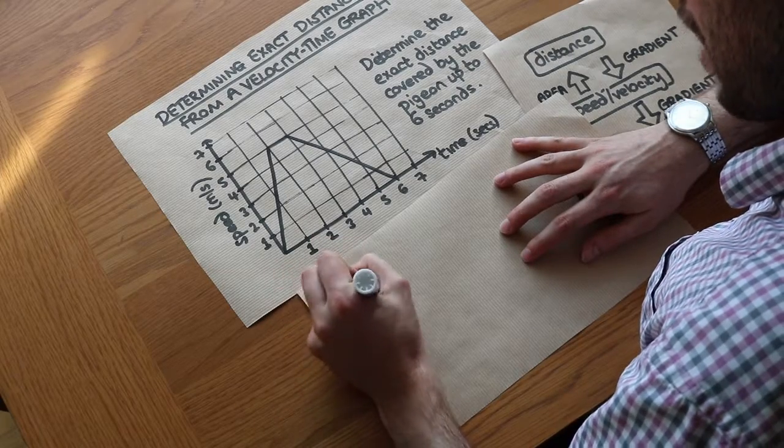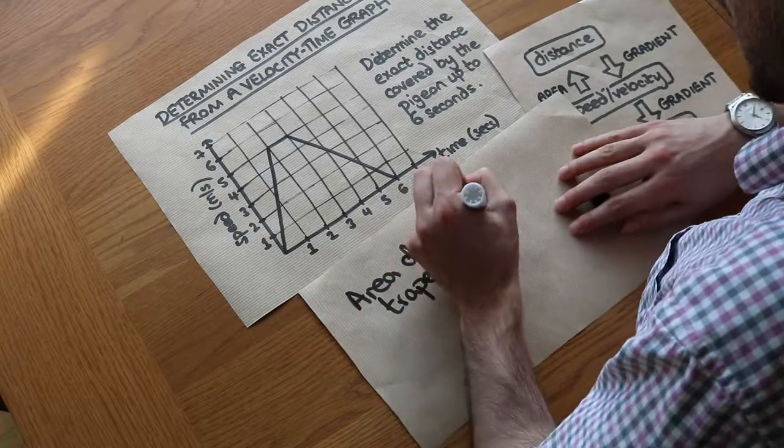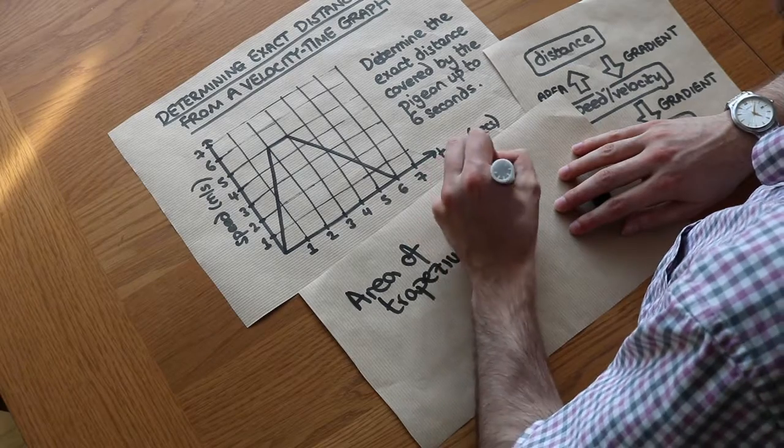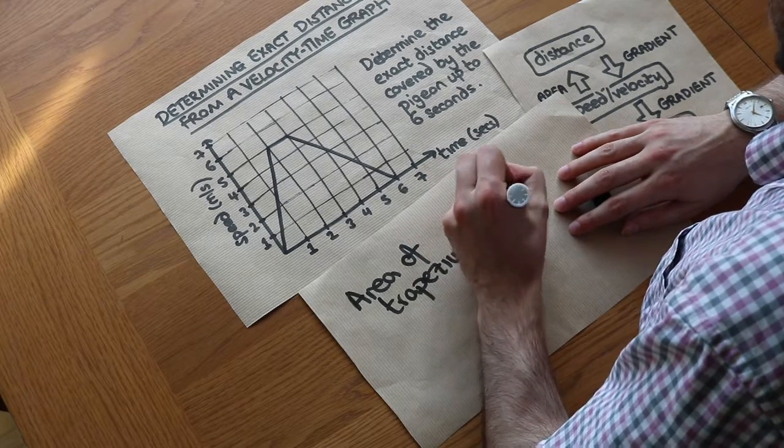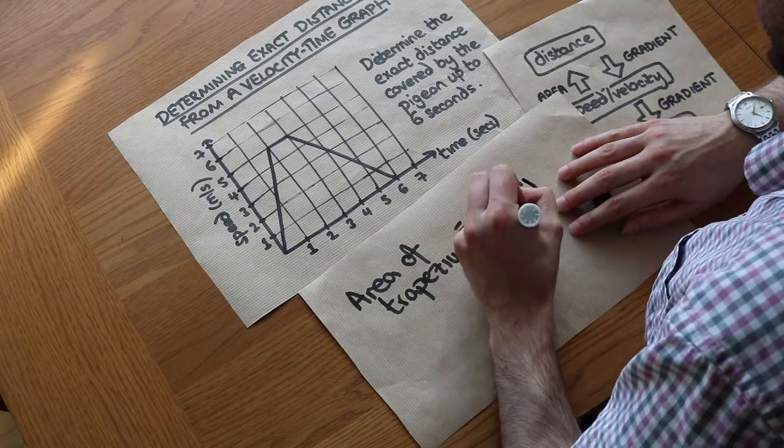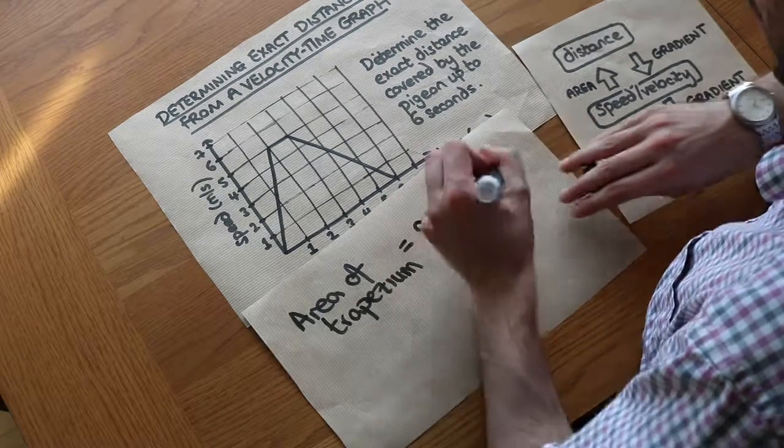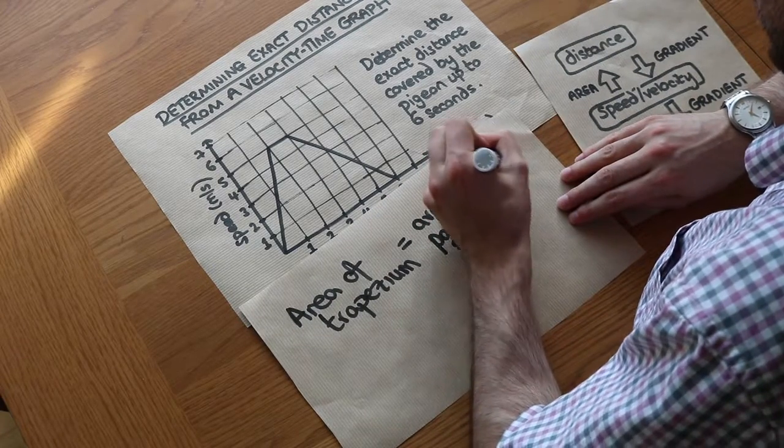Do you remember that the area of a trapezium is the average of the parallel sides—and to find the average of two values we add them, divide by two—times by the distance between them.